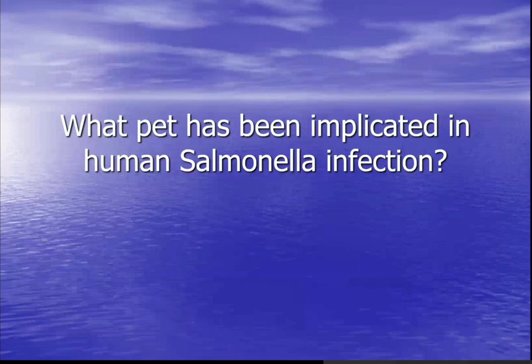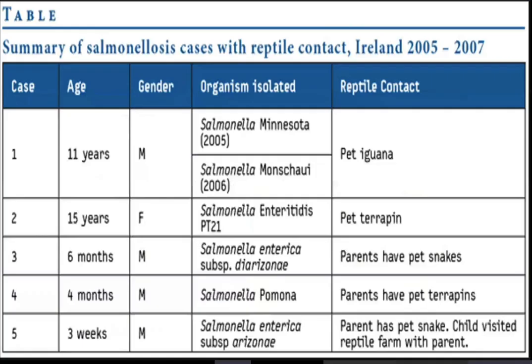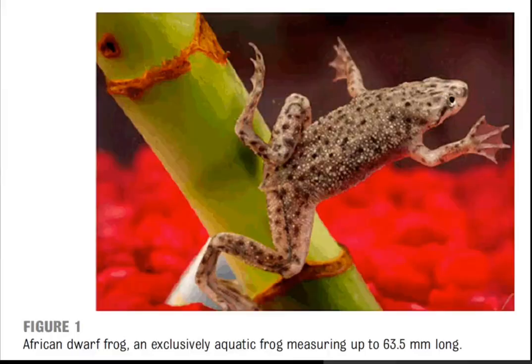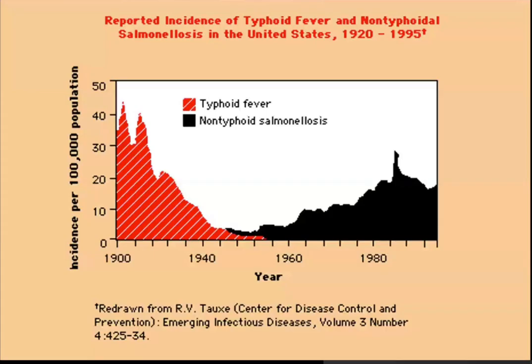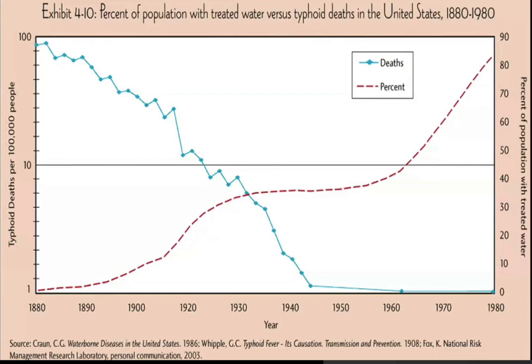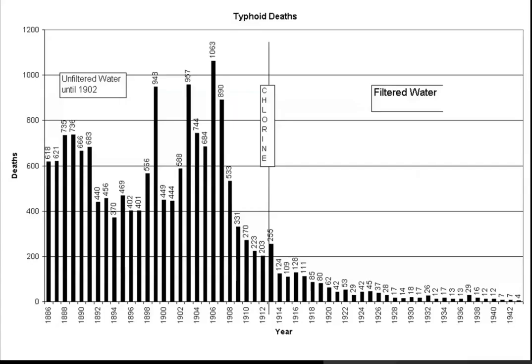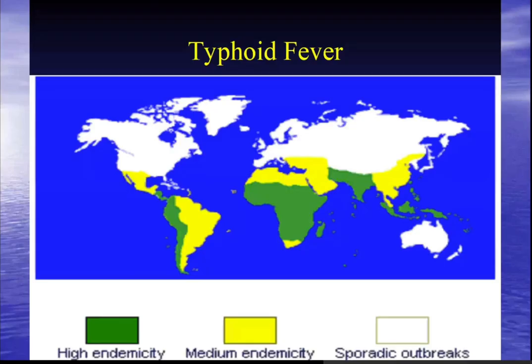Salmonella has been implicated in pet reptiles and amphibians — turtles, iguanas, snakes, and even frogs can all carry it. Typhoid was common in the U.S. 120 years ago but disappeared with improved sanitation and water chlorination — it was already very rare by the early 1900s. Worldwide, the green areas on the map show where most typhoid still exists.